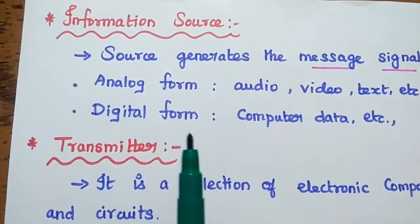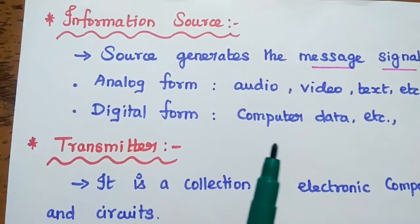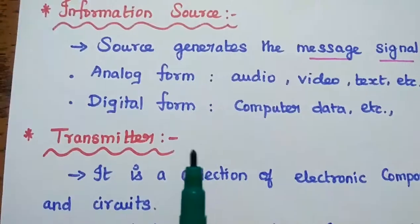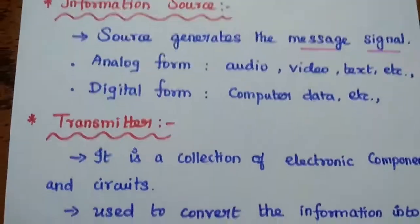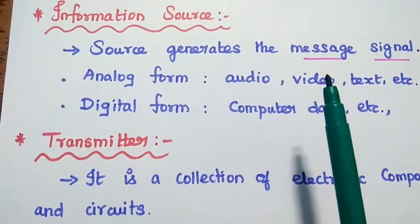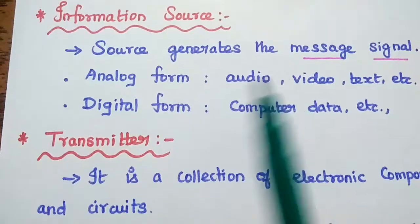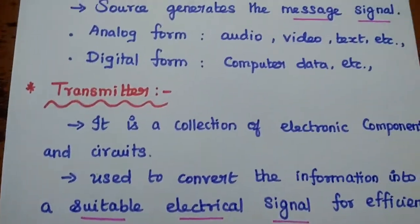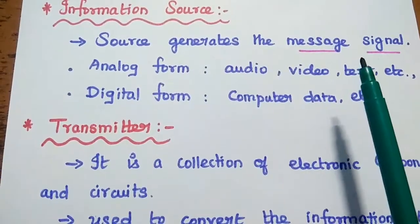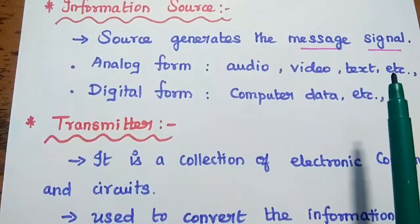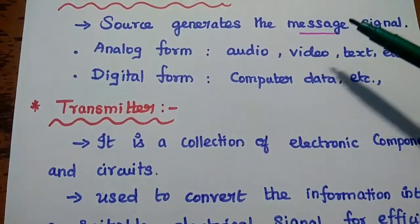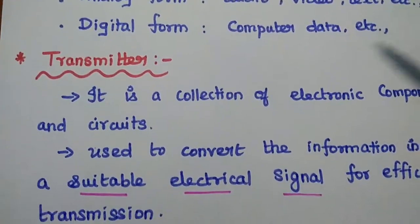Digital form of signals includes binary code, numbers, or computer data — these constitute digital information. This is the original message signal from the source. In a communication system, we cannot transfer the original message signal as-is through the channel; we need to convert it into a suitable form.